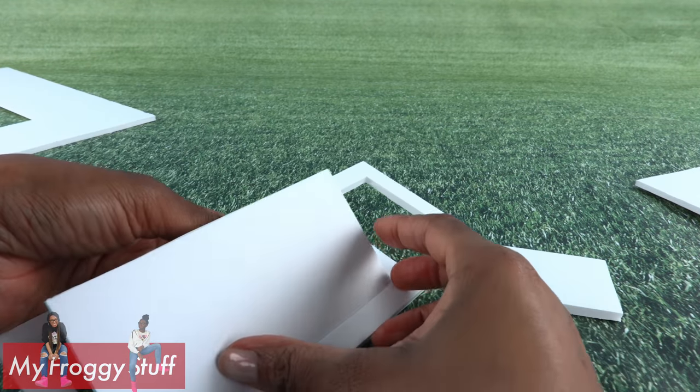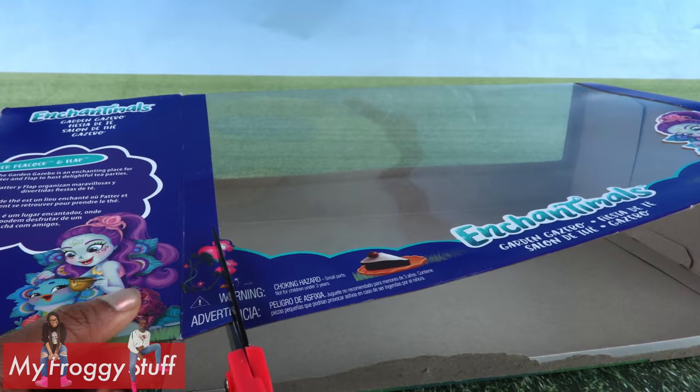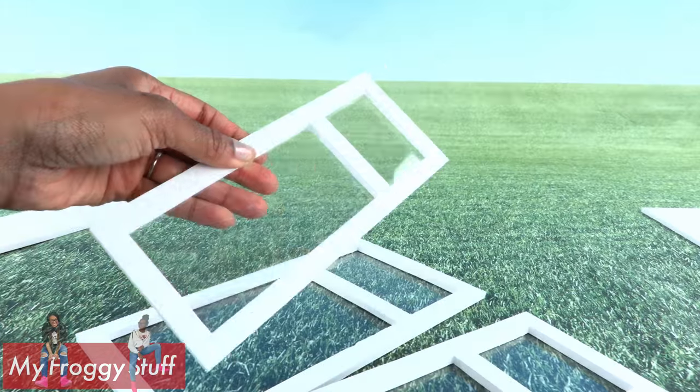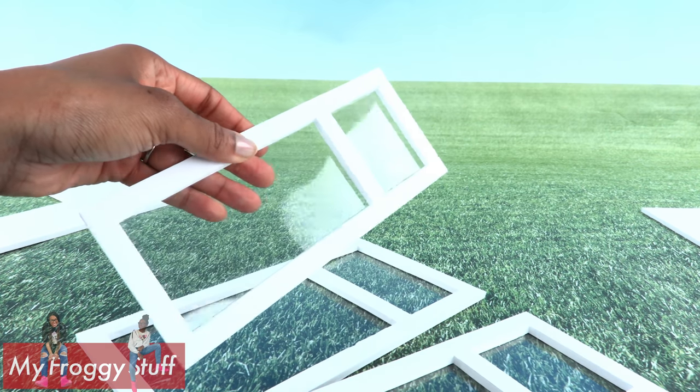Take the rectangles. Cut out windows. Cut clear plastic from packaging to glue on the back side of the window so our windows look like they have glass.